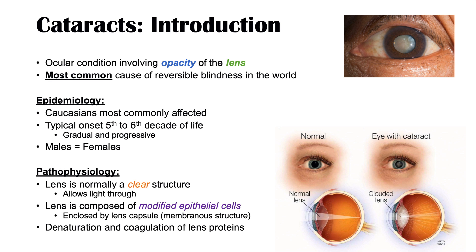With cataracts, any process that can cause denaturation, degeneration, or coagulation of the lens proteins can lead to opacity of the lens. These epithelial cells and proteins inside the lens become denatured and coagulate, leading to a clouded, opaque lens that prevents light from reaching the retina properly.